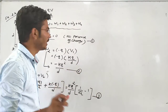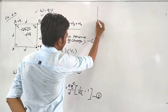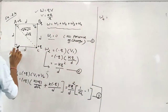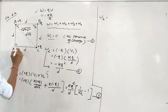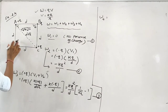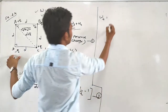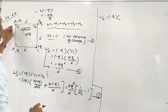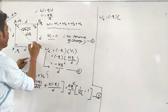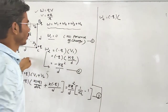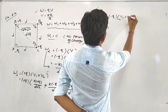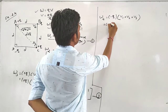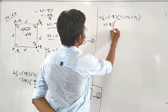Now we have to find out W4, that means for point D. At point D, the potential available includes V1, V2, V2 — and so we have W4 equals minus Q into the bracket: V1 plus V2 plus V2.